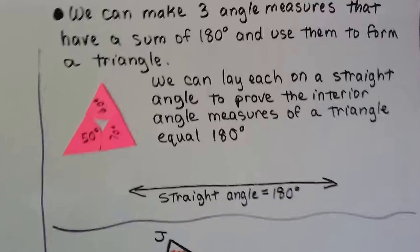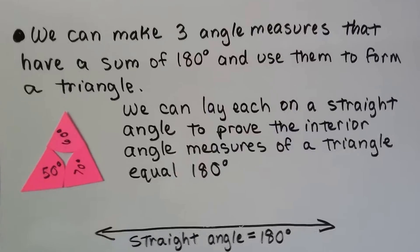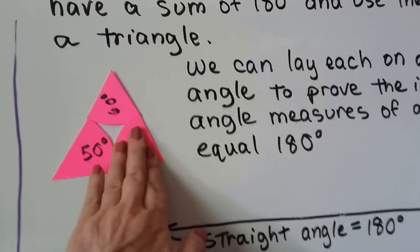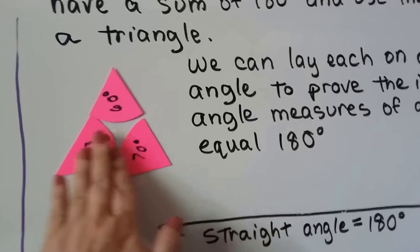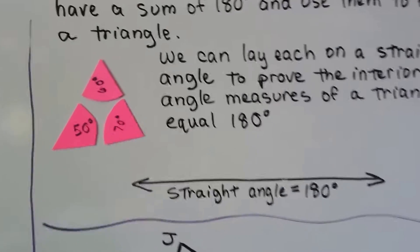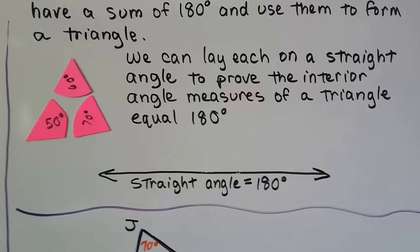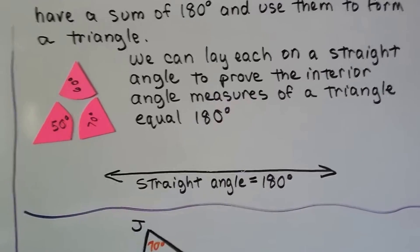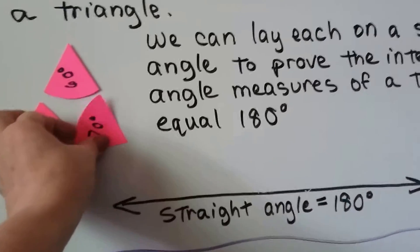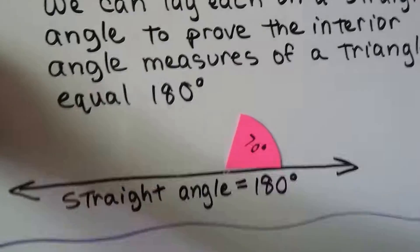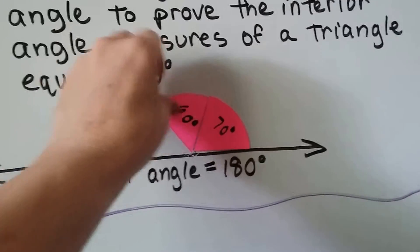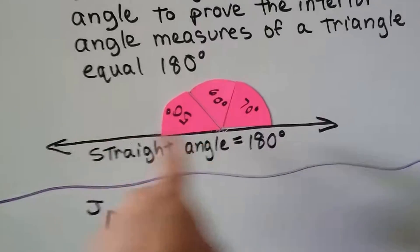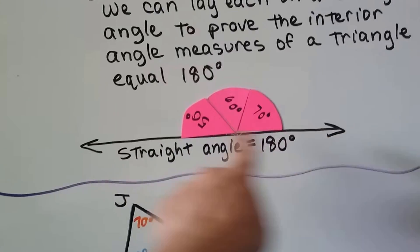We can take three angle measures that sum to 180 degrees and use them to form a triangle. With a 60-degree, a 70-degree, and a 50-degree angle, they form a triangle. We can lay each one on a straight angle — placing the 70, then the 60, then the 50 — and see that together they make 180 degrees.